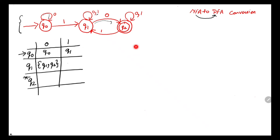Then q1 with 1: the next state is q1. For q2 with 0: the next state is q2. For q2 with 1, it goes to both q2 and q1, so we write {q1, q2}.